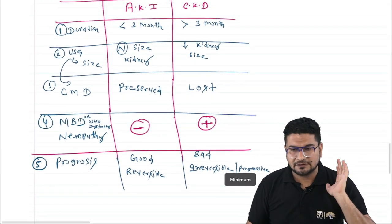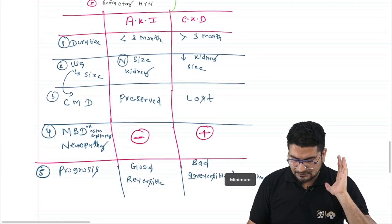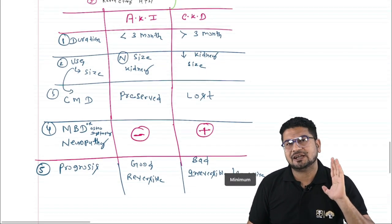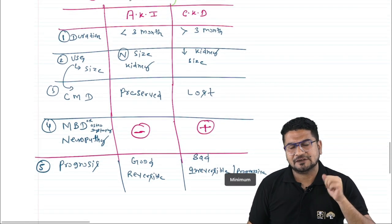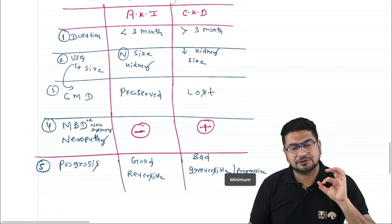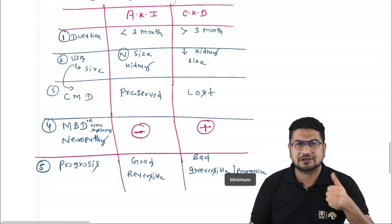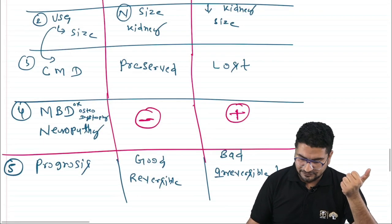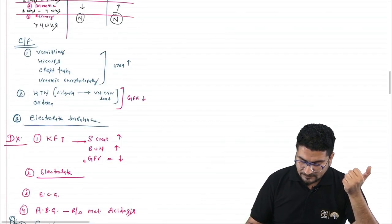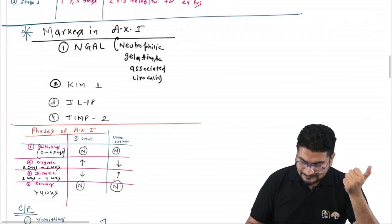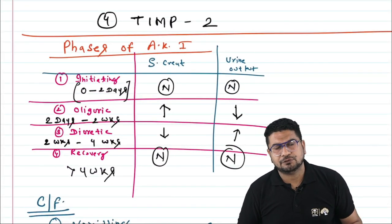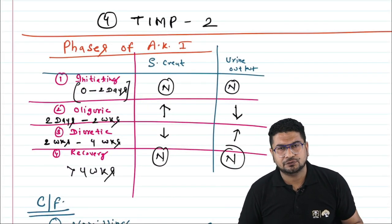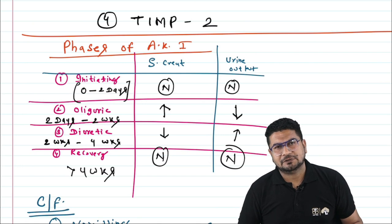Key points to remember for AKI: nephrotoxins, KDIGO staging, differences between AKI and CKD, and the phases of AKI. These are commonly tested in exams.